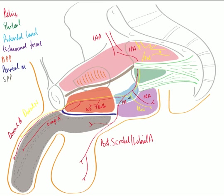Within the pudendal canal, the pudendal nerve gives off a third branch known as the perineal nerve. This perineal nerve splits into two branches: a deep branch that goes into the deep perineal pouch to supply the external urethral sphincter and associated muscles, and a superficial branch that supplies the musculature within the superficial perineal pouch and terminates as the posterior scrotal nerve — or, in the female, the posterior labial nerve — supplying the posterior scrotum or labia.